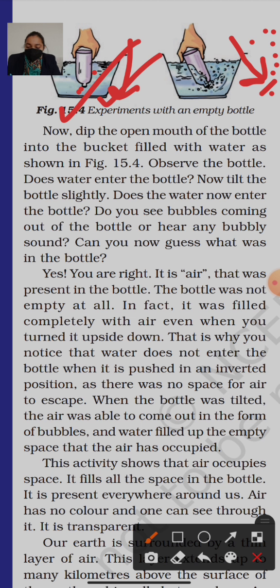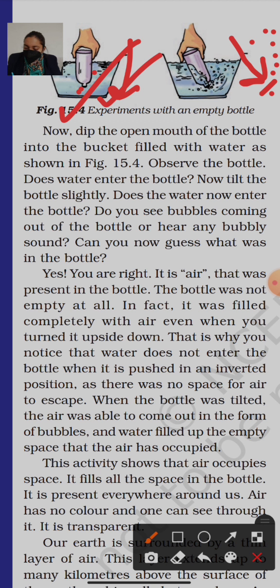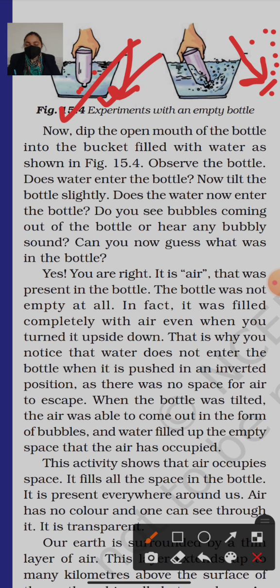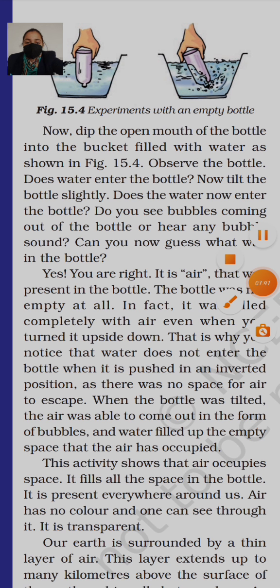When the bottle was tilted, the air was able to come out in the form of bubbles. Jaise hi humne usko halka sa teda kiya, space mila — us space se air bubbles ki form mein bahar aa gayi aur water andar jaane laga. And water filled up the empty space that the air had escaped. Teda karte hi jaise air escape hui bahar aayi, water ne woh jagah occupy karni shuru ki. This activity shows that air occupies spaces — air space occupy karti hai. Aisa nahi hai ki koi jagah specific, wahan pe kuch nahi dikh raha to wahan air nahi hai. Air is everywhere.